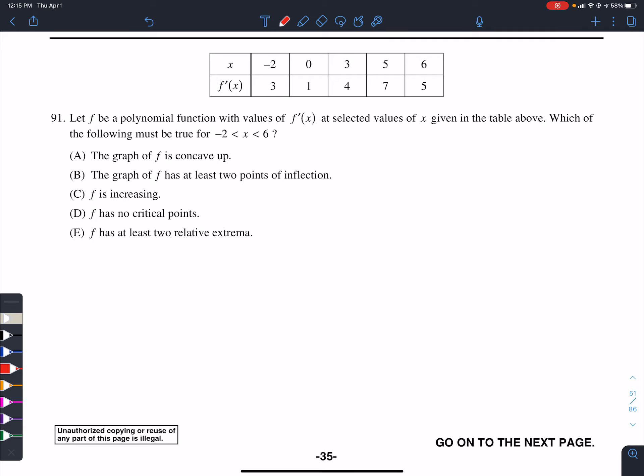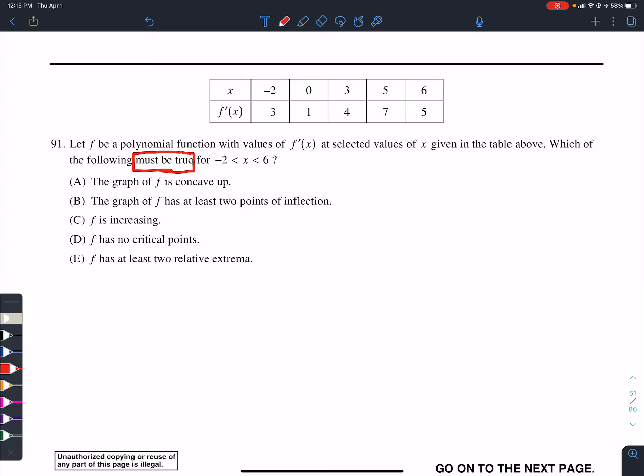Okay, so they're looking for what must be true. Not can be, but must be. So where are we at the first one? They're saying F is concave up. In your brain, you should immediately think the second derivative is positive or the first derivative is increasing. Okay, does that have to be true for this?